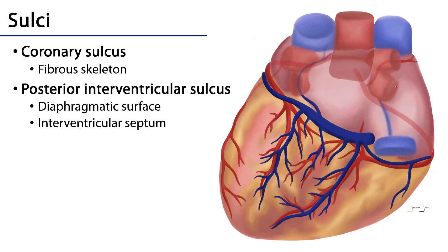If we look at the posterior and inferior portion of the heart, we can see a continuation of the coronary sulcus, as well as the posterior interventricular sulcus, which aligns with the interventricular septum. We can see that the atria sit above the coronary sulcus — the left atrium and the right atrium — and the left and right ventricles below. You might also notice that within these sulci, various elements of vasculature can be found. The main branches of the coronary arteries and the coronary sinus can be found within the coronary sulcus, making it an excellent pathway for vasculature.